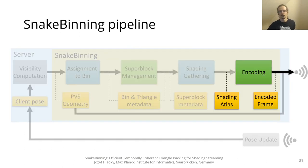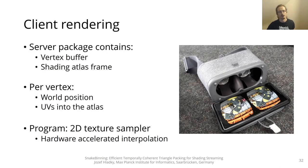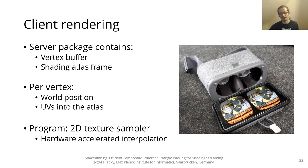After obtaining the shading atlas frame, we stream it to the client along with the PVS geometry. The client then uses a forward rendering pipeline to render novel views by shading the PVS geometry with the shading atlas, supporting hardware accelerated texture sampling.